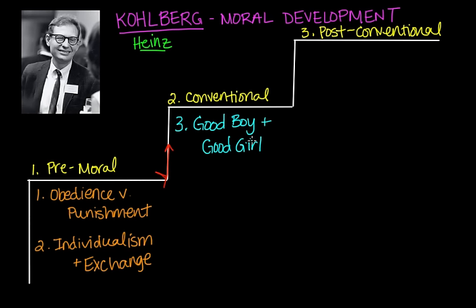The fourth stage of morality is maintaining social order — law and order. Here the child becomes aware of the wider rules of society. Judgments concern obeying rules in order to uphold the law and to avoid guilt. It's all about what society says at this point. Once past that, we move into the post-conventional stage, which is split into stages five and six.